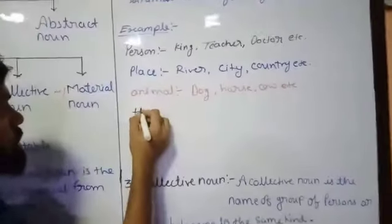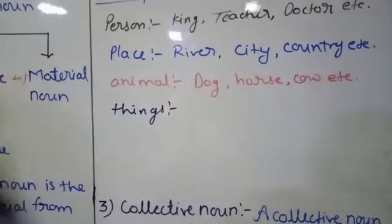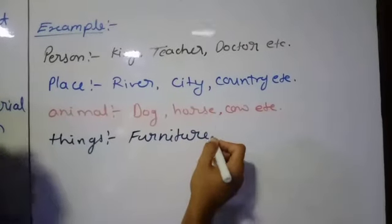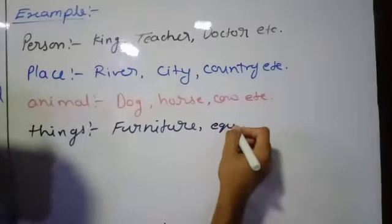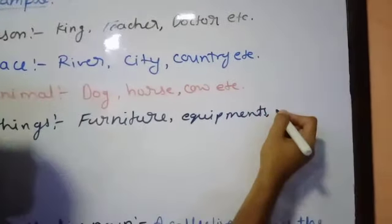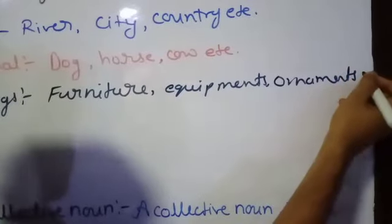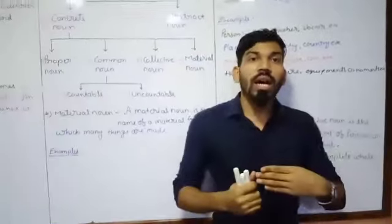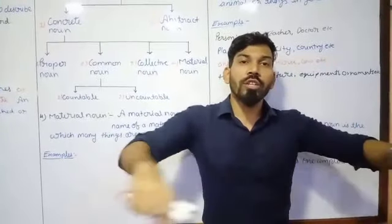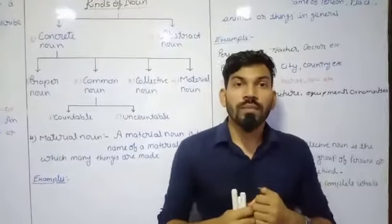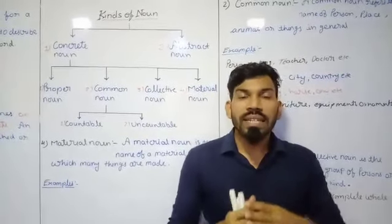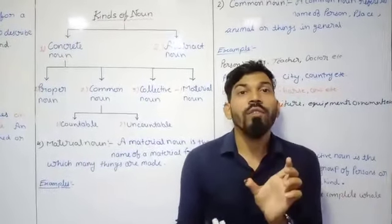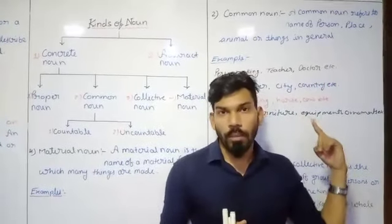The next category is things. If we are talking about things like furniture, equipment, ornaments, etc. — these are commonly used for various kinds of things. For example, if I talk about furniture: table, chair, bench, etc. — all such things are included. Whenever we have such common names for things, that is called a common noun.